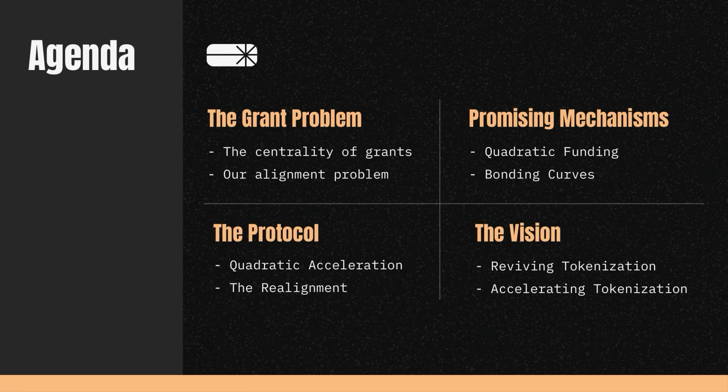We'll talk about promising mechanisms and what they offer, and what are some of the shortfalls. And then I want to present the idea of quadratic acceleration — we're calling it QAC for short — and the realignment it brings. And then bring a reminder to ourselves on what was the original vision of tokenization, and have we lost track of the mission.